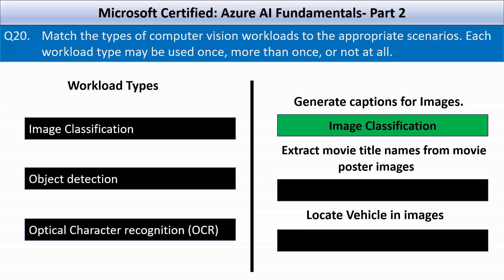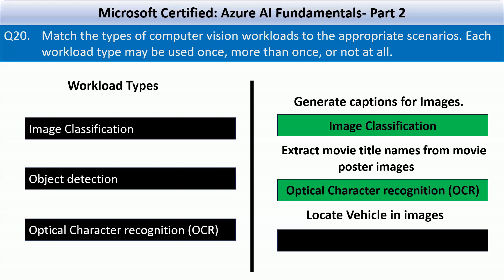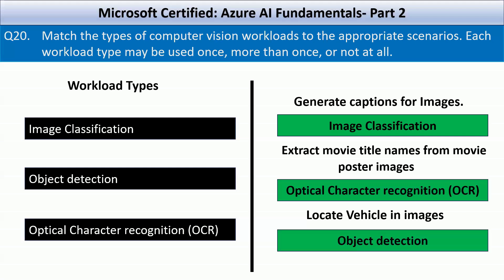The second option — extracting movie title names from movie poster images — uses OCR, which detects and extracts text from images such as movie titles from posters. The third — locating vehicles in images — uses object detection, which finds and locates specific objects like vehicles in an image. If you still have doubts, post them in the comment section.